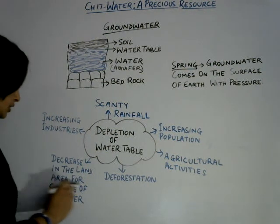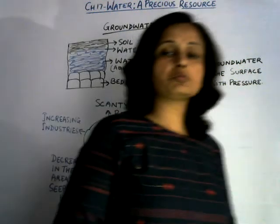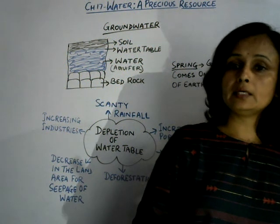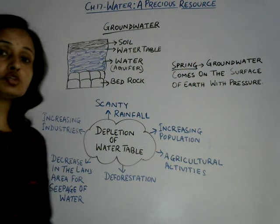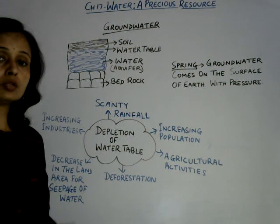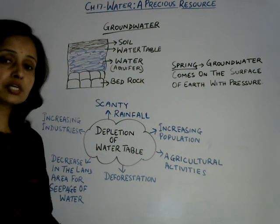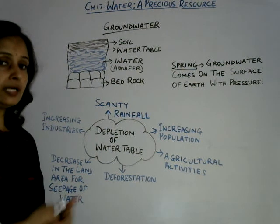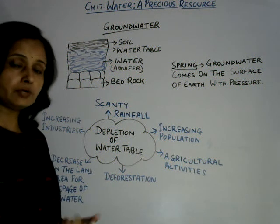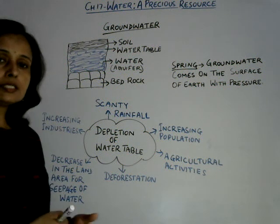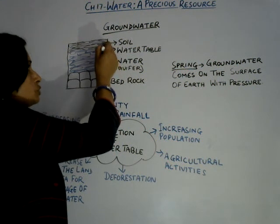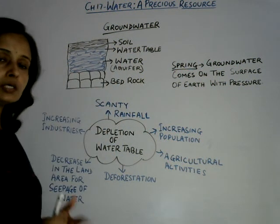Next: decrease in land area for seeping of water. Nowadays so many buildings are constructed on large land areas — not only houses, but different apartments, malls, schools, hospitals, and industries — resulting in a lack of actual land area for water to seep into. So there is less area for seeping of water. The infiltration process is less, and due to less infiltration, the aquifer and water table will be reduced — it will deplete, going in the downward direction.